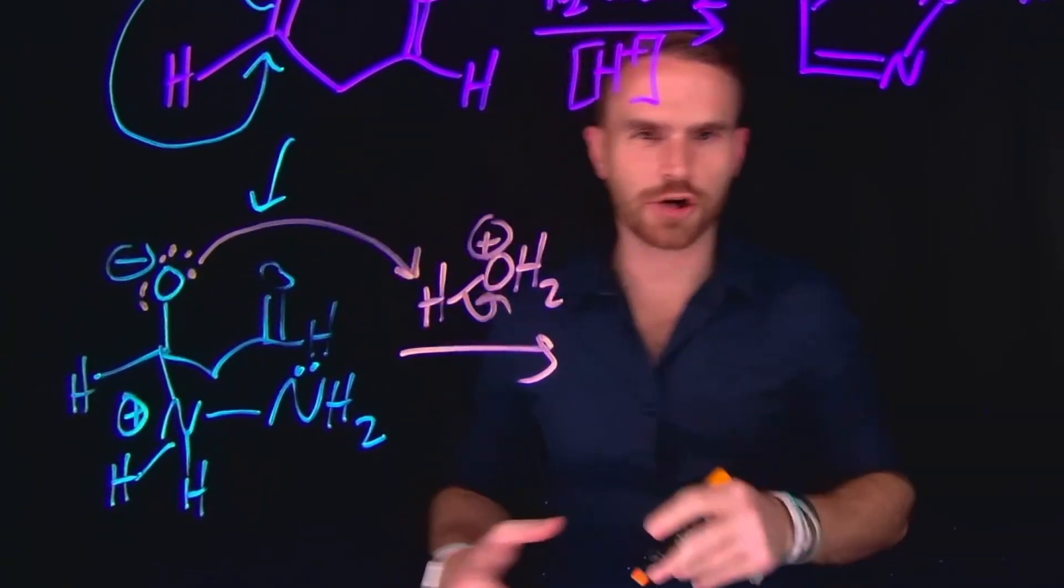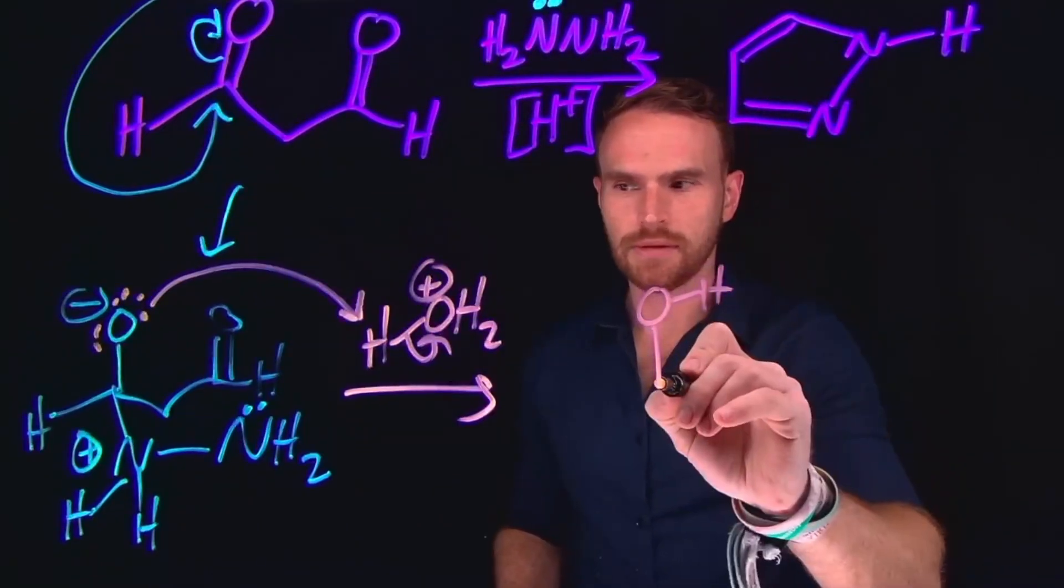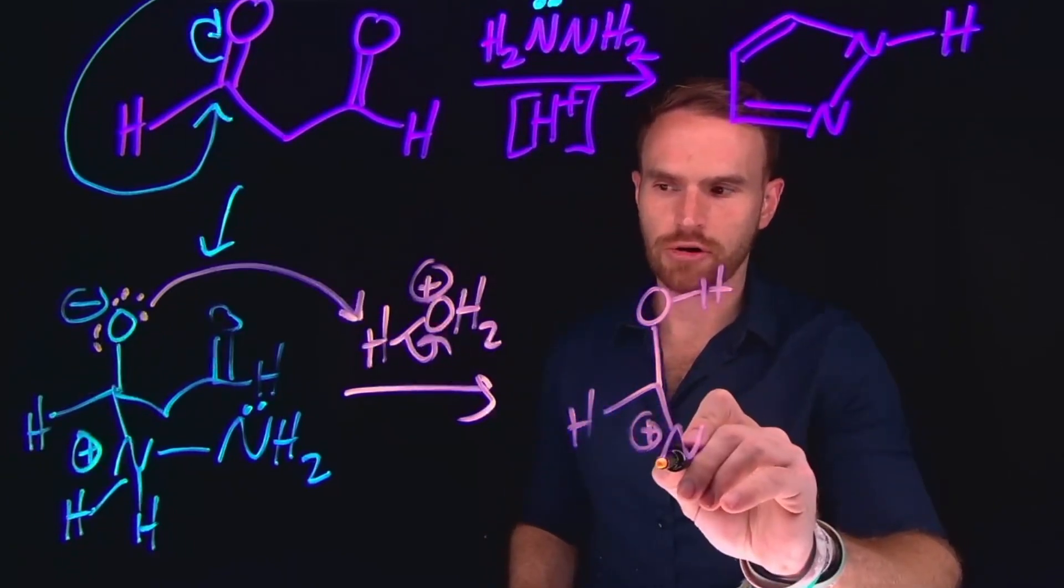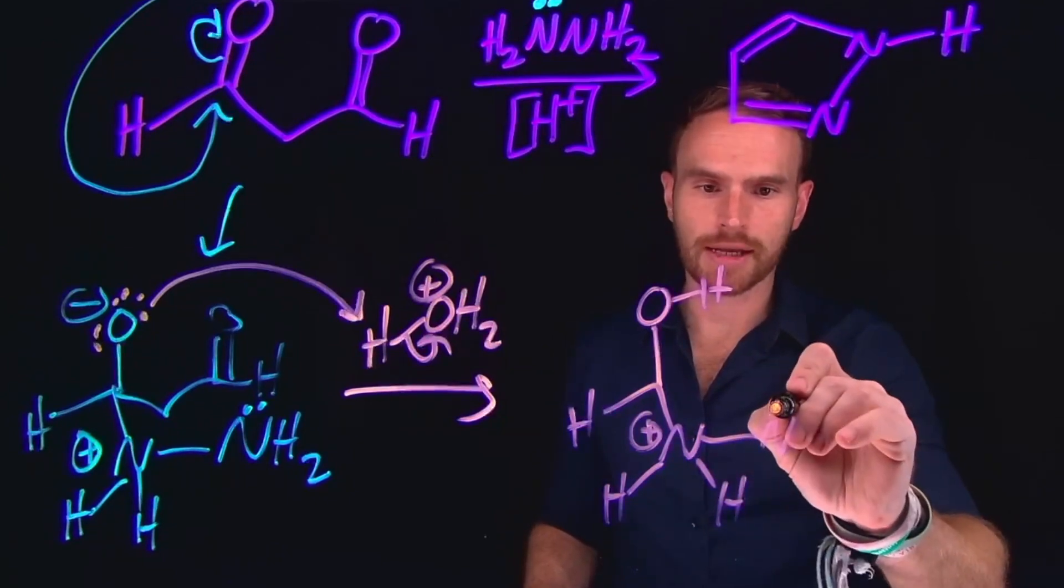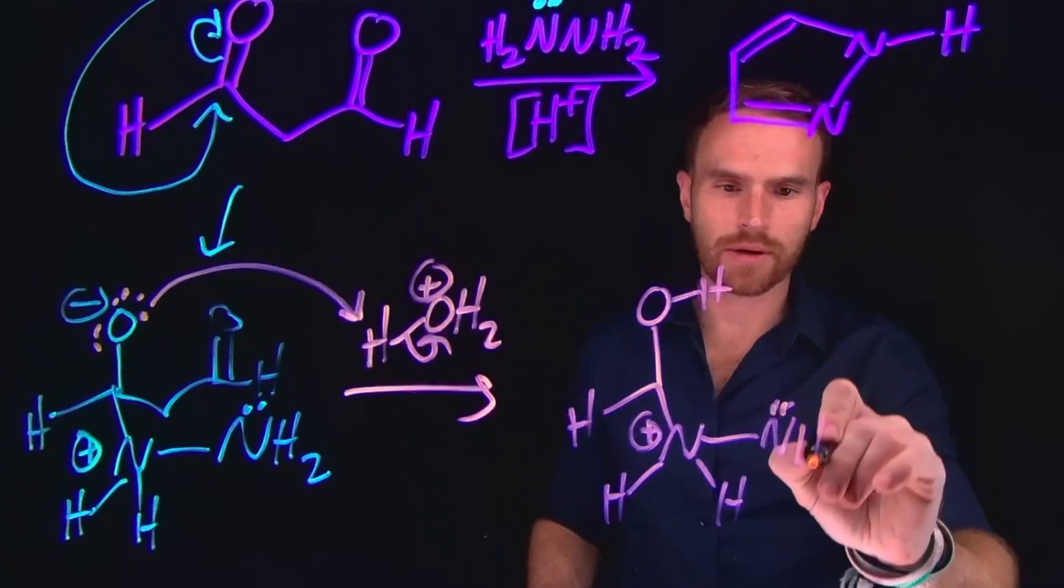And now we can protonate this oxygen, which is negatively charged, which is going to generate water as a byproduct. And that intermediate is now an alcohol at that position. And everything else remains the same, including our positively charged nitrogen,